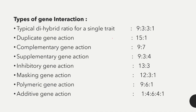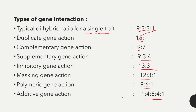Some important ratios related to gene interactions are: typical dihybrid ratio 9:3:3:1; duplicate gene action 15:1; complementary gene action 9:7; supplementary gene action 9:3:4; inhibitory gene action 13:3; masking gene action 12:3:1; polymeric gene action 9:6:1; and additive gene action 1:4:6:4:1.